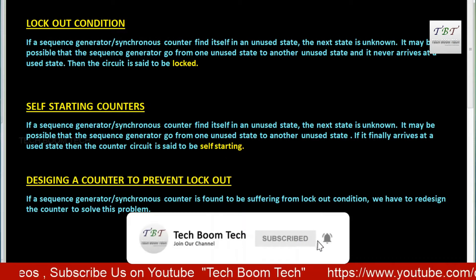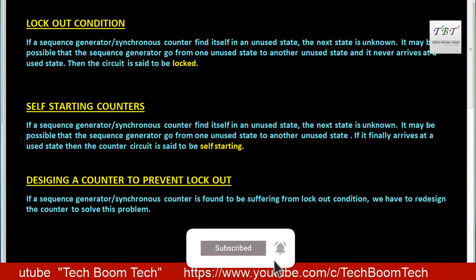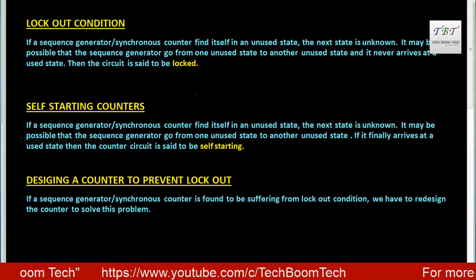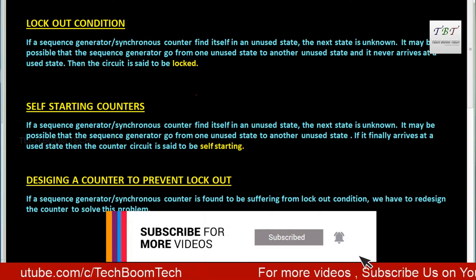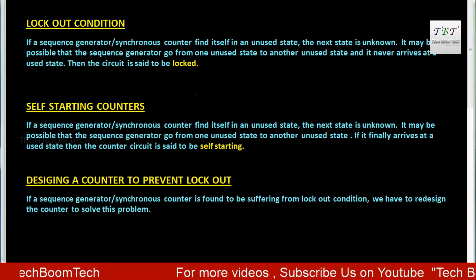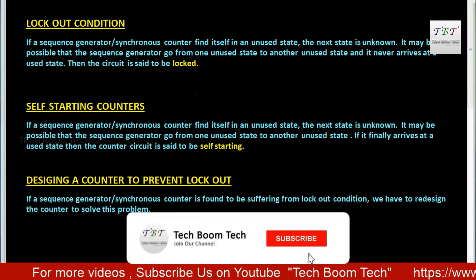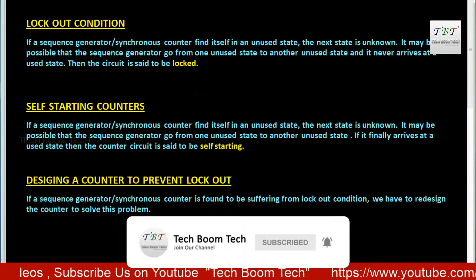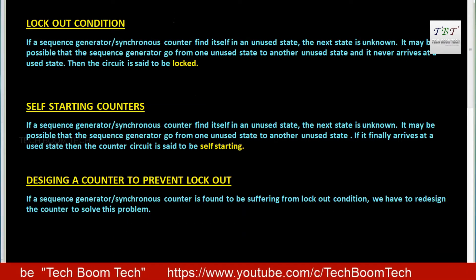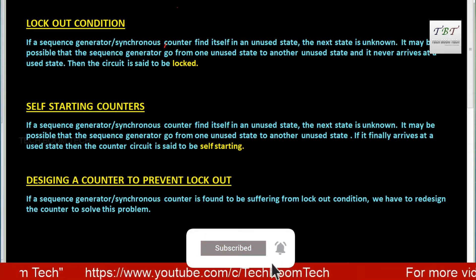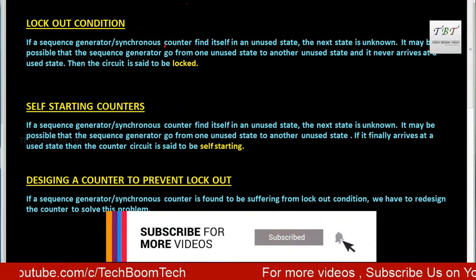In this video I'm going to discuss some terms related to counters. The first one is lockout condition, then self-starting counters, and how to design a counter to prevent lockout. We'll discuss a mod-5 counter, a mod-12 counter, and counters with a particular sequence — for example: 0, 2, 5, 4, 7, then back to 0. For a mod-5 counter, it will not be possible to count all the states.